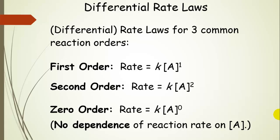I have shown rate laws for three common reaction orders. The first one is a first order reaction — this is first order overall — and the rate of the reaction is equal to the rate constant multiplied by the concentration of reactant A to the first power. That's a first order reaction. Lots of reactions fit into this category. Another general category is the second order reaction, which is second order overall, and the rate equals the rate constant multiplied by the concentration of A to the second power.